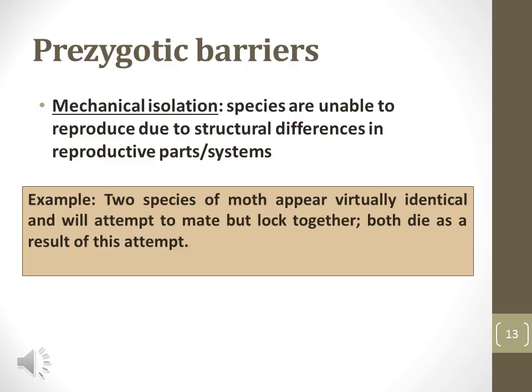A fourth type is mechanical isolation. Mechanical isolation describes the situation where individuals of different populations cannot reproduce due to physical differences of reproductive systems. In the example on this slide, the two species of moth appear virtually identical and will attempt to mate, but lock together. As a result of this, both will die.